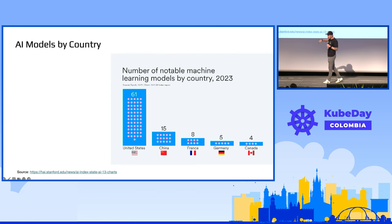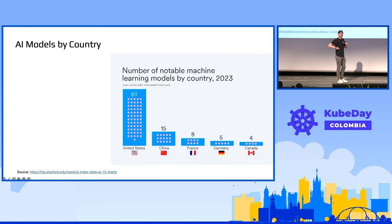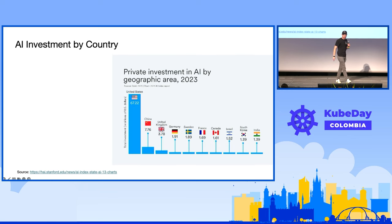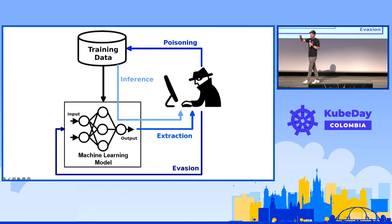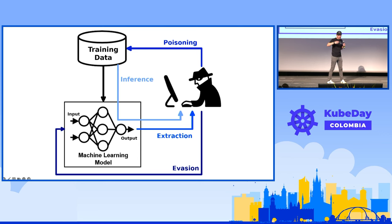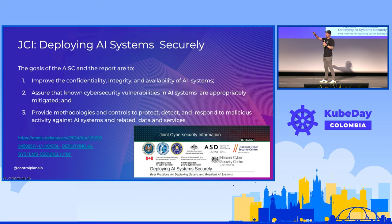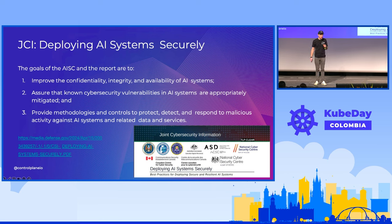If we look at where countries are investing, we can see we can't necessarily trust the models that come from countries we're not aligned with as a superpower. A Chinese model has a very different view of the world from an American model, and the money being thrown into these globally means that they exist everywhere. We can't be sure that the training data isn't poisoned, and we can't be sure that the output of the model is entirely trusted.